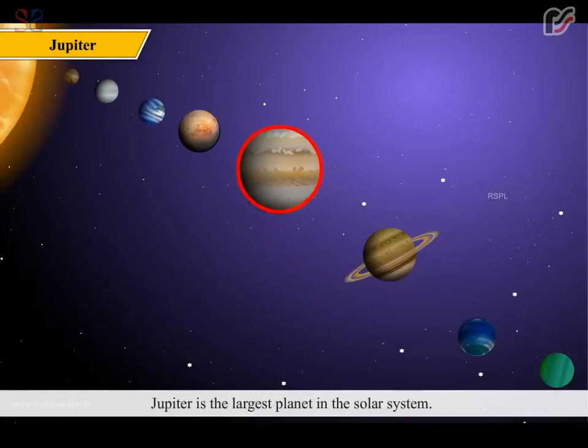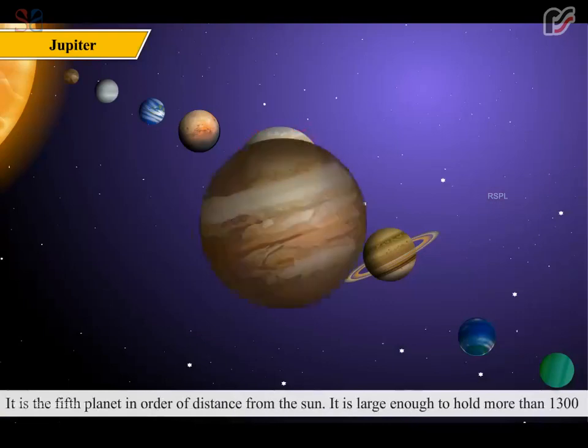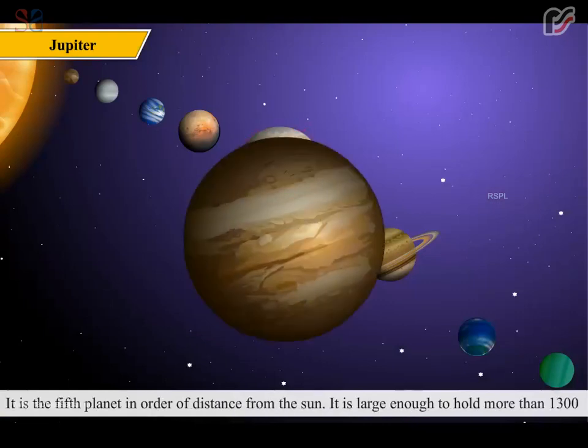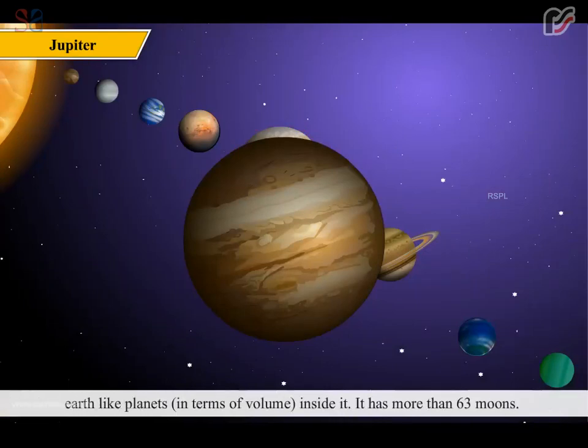Jupiter is the largest planet in the solar system. It is the fifth planet in order of distance from the Sun. It is large enough to hold more than 1300 Earth-like planets in terms of volume inside it. It has more than 63 moons.